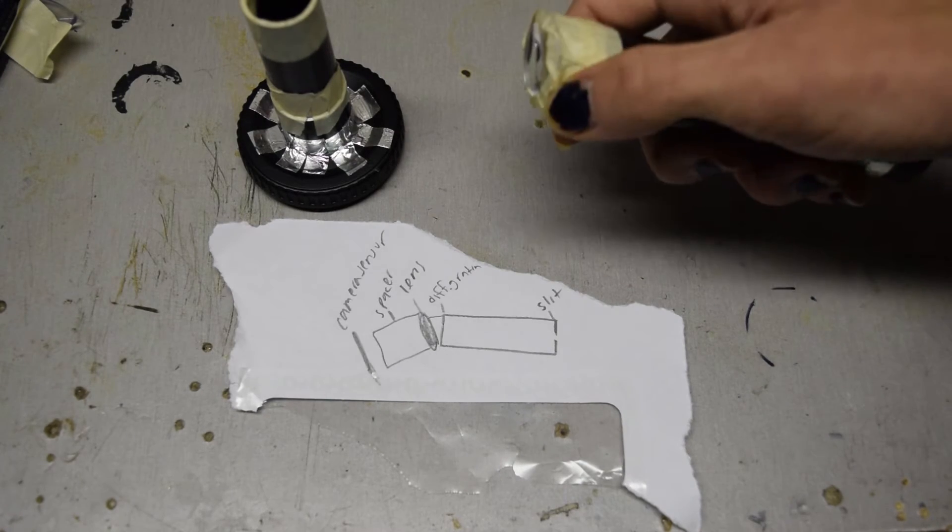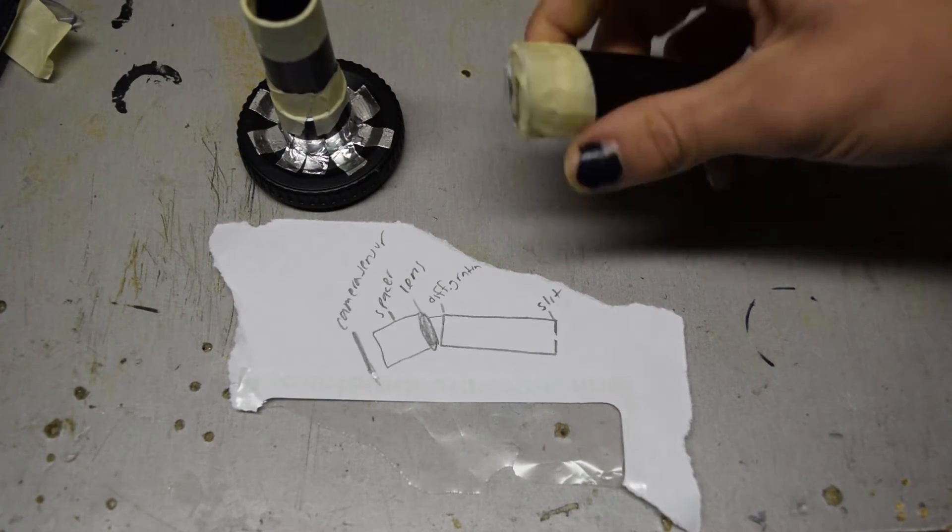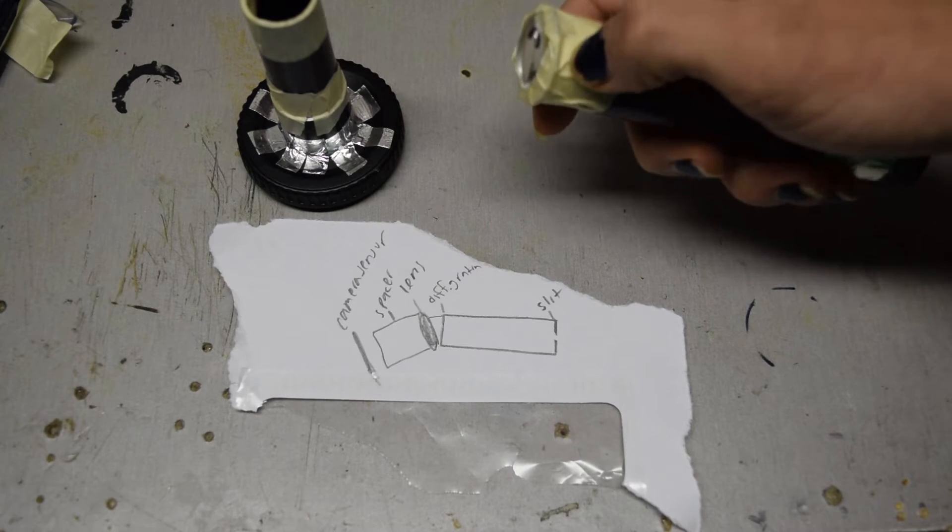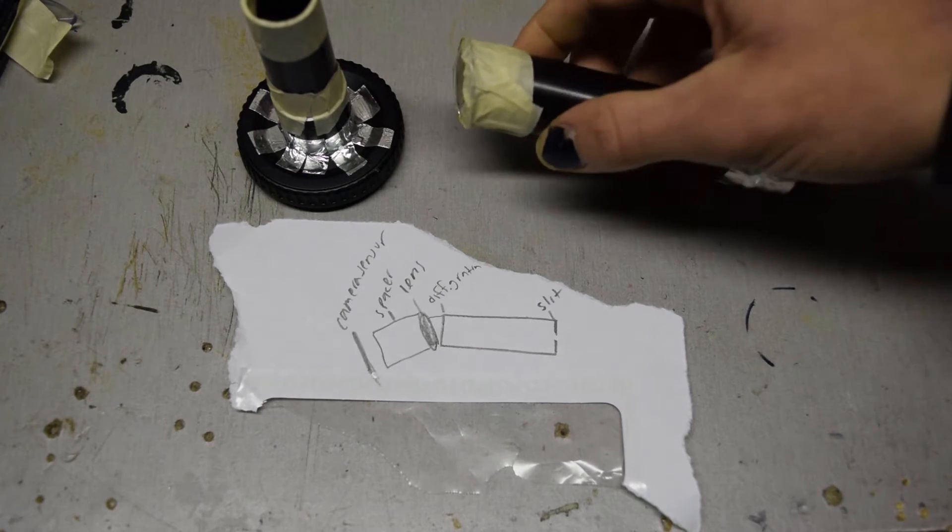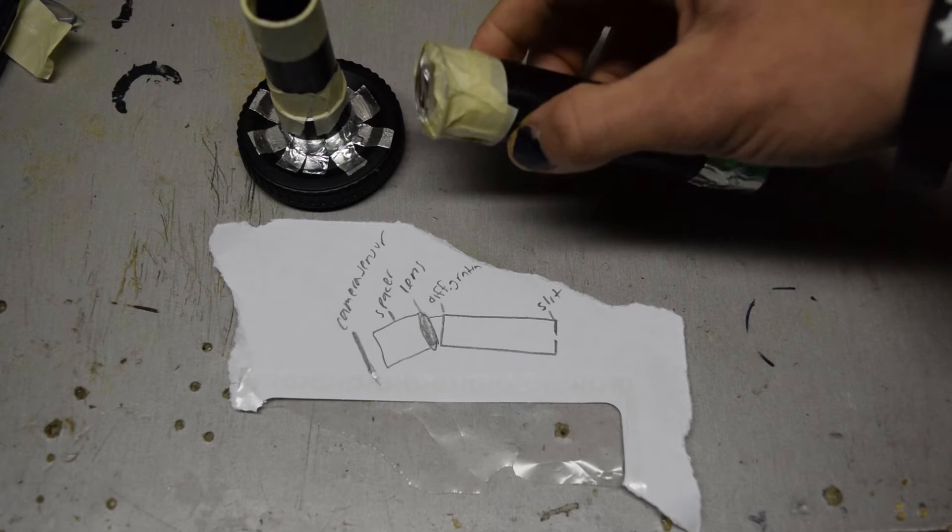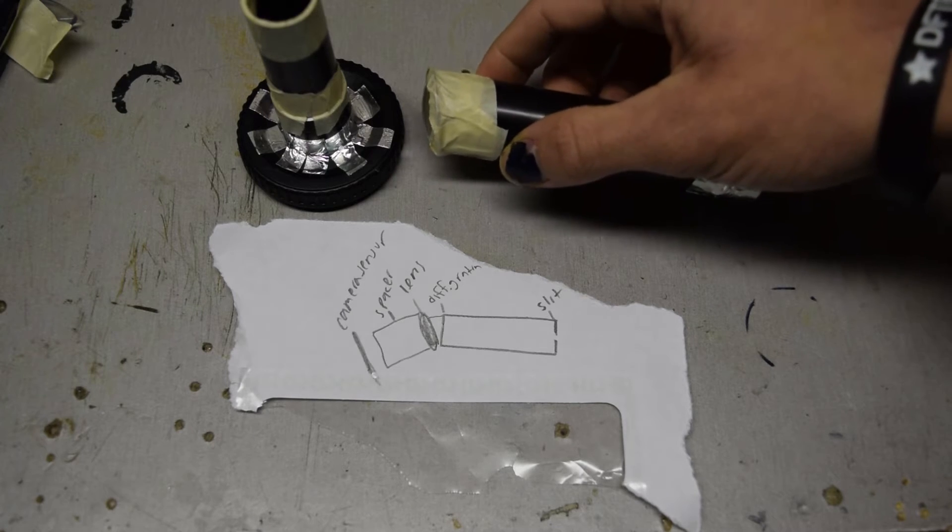This is a lens I got out of an old video camera. It's a convex lens, convex on both sides. It's required in order to focus the light onto the camera sensor.